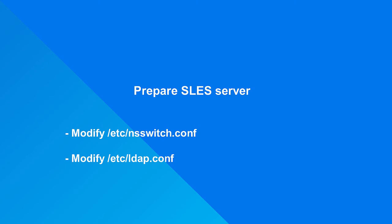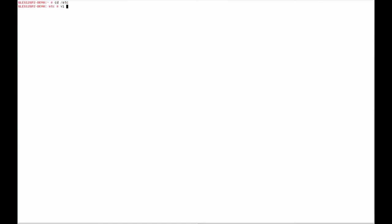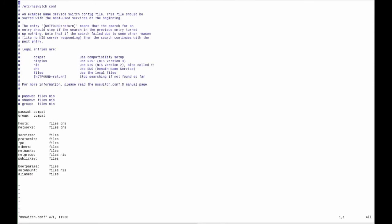Now prepare the SLES server to connect to eDirectory LDAP. The /etc/nsswitch.conf file directs name resolution to specific services. Modify nsswitch.conf to include LDAP for both password and group. Use VI to modify /etc/nsswitch.conf to comment out the existing password and group options, and add a new option containing files and LDAP.